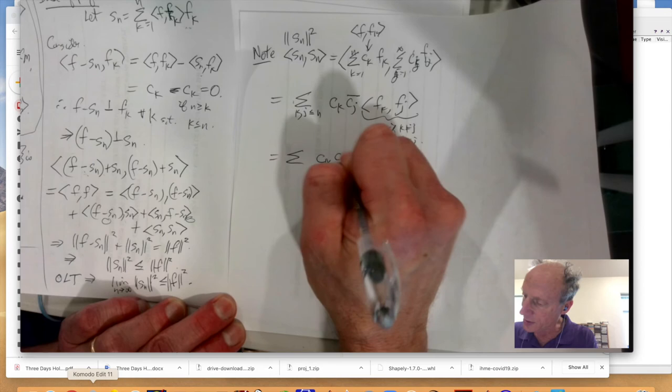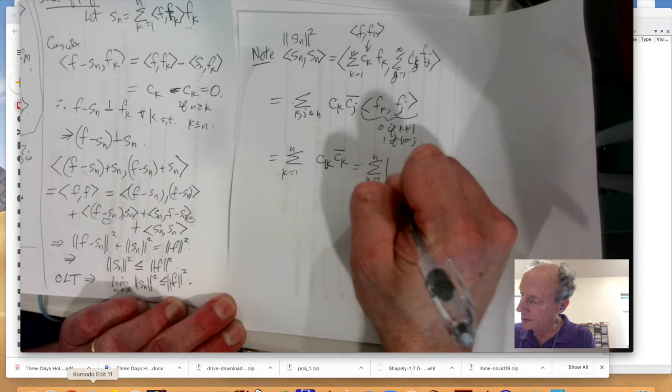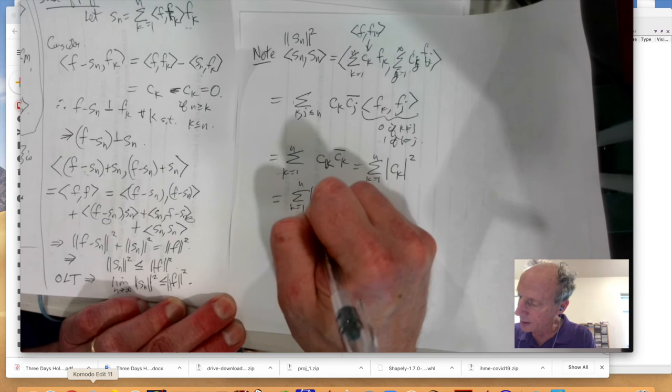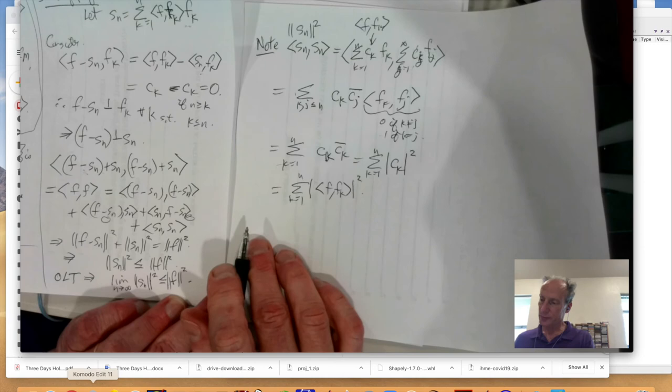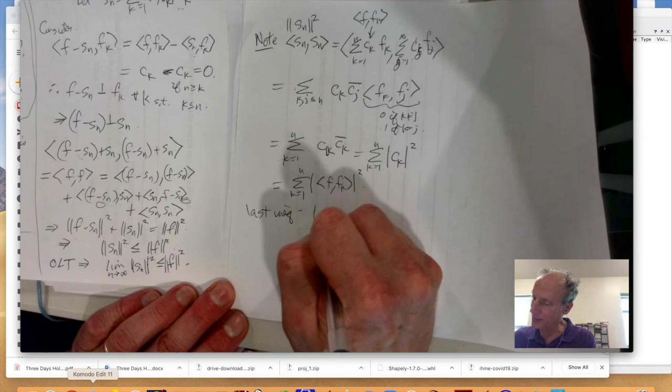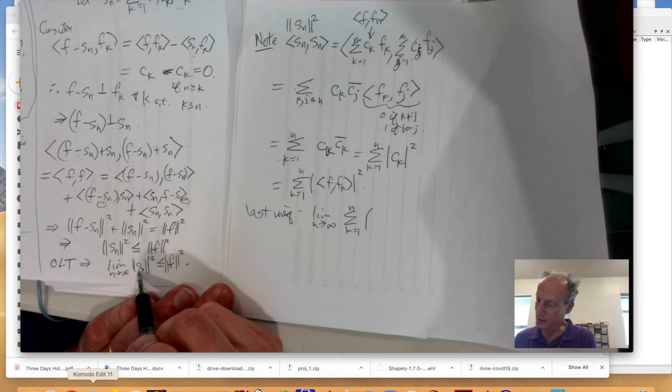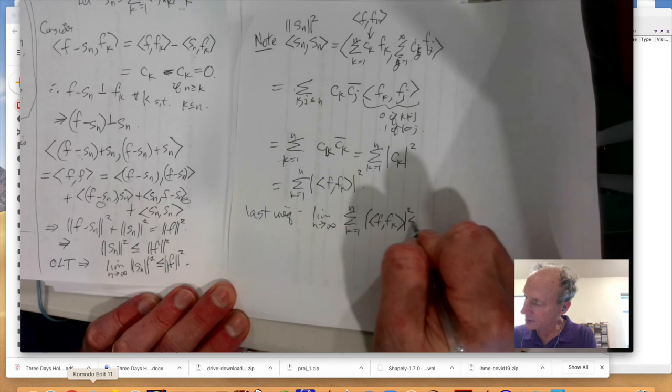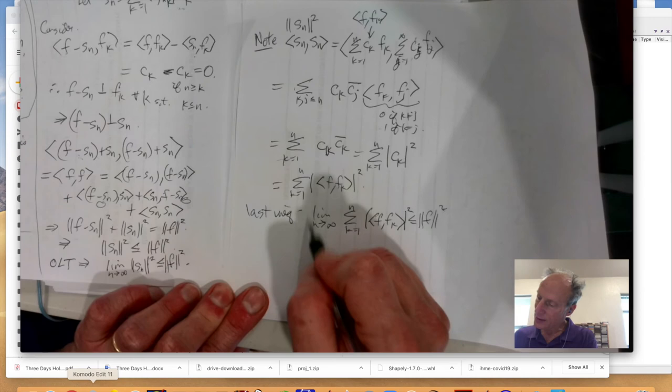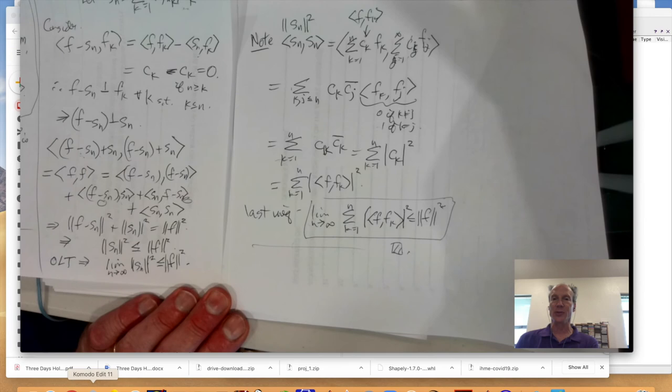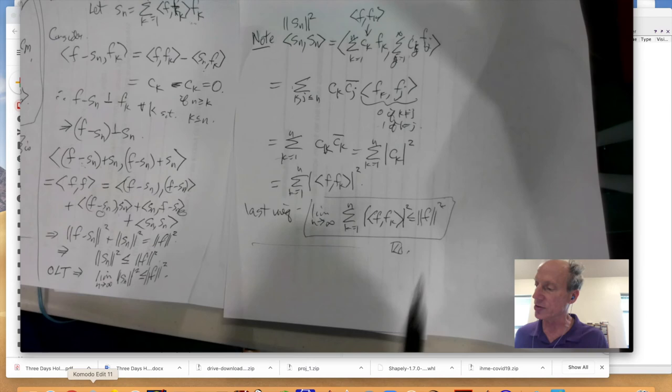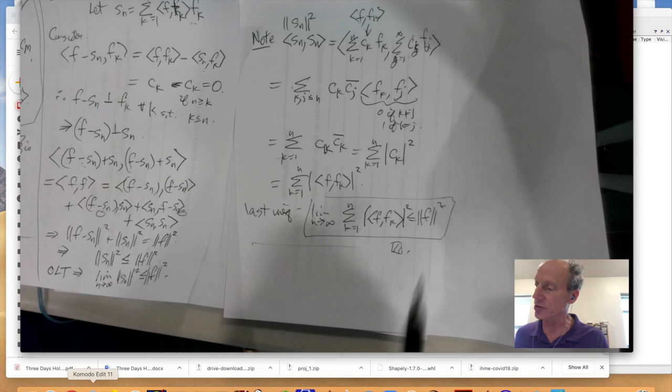So the amazing thing is the sum of Ck, Ck bar, k equal 1 to n, which is summation of k equal 1 to n of Ck squared, which is summation k equal 1 to n of inner product F with Fk squared. So, the last inequality tells us that the limit as n goes to infinity of summation k equal 1 to n of F with Fk squared is less than or equal to F squared. That's exactly what we're trying to prove. That is the Bessel inequality. And this is completely general. Any inner product space, any orthonormal set, you will always have that. This guy will always converge as an infinite series. Fantastic stuff.